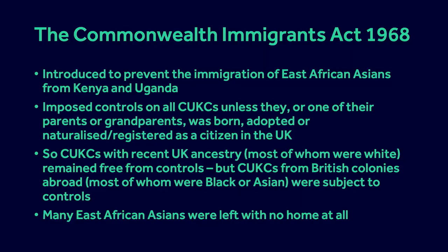By then, a Labour government was in power, led by Prime Minister Harold Wilson, with future Prime Minister James Callaghan as Home Secretary. If you were expecting Labour to be less racist than the Conservatives, you'd be disappointed. Callaghan introduced the Commonwealth Immigrants Act 1968, with the aim of excluding East African Asians from the UK. The 1968 Act expanded the scope of controls established by the 1962 Act.